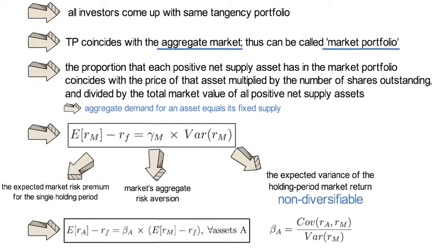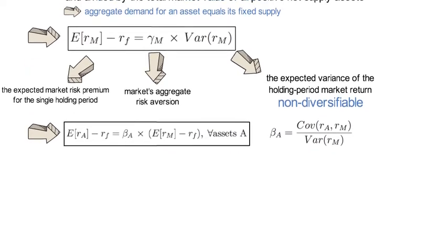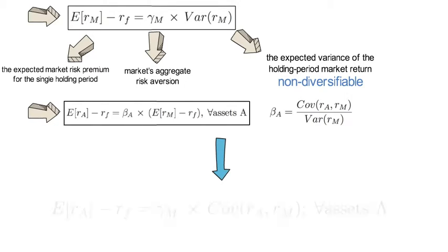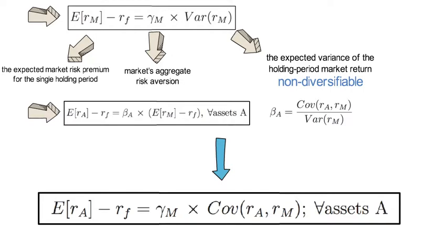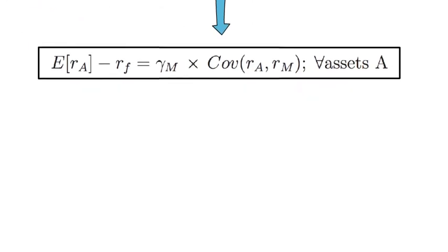When you combine the last three equations, you obtain a statement about the expected risk premium of asset A that you don't see written this way too often. Namely, in the CAPM it holds that the expected risk premium of asset A equals the risk aversion of the market times the covariance of asset A's return with the market return. I want to explicitly discuss this expression because it can create confusion at first, but resolving that confusion will improve your understanding of this important concept.